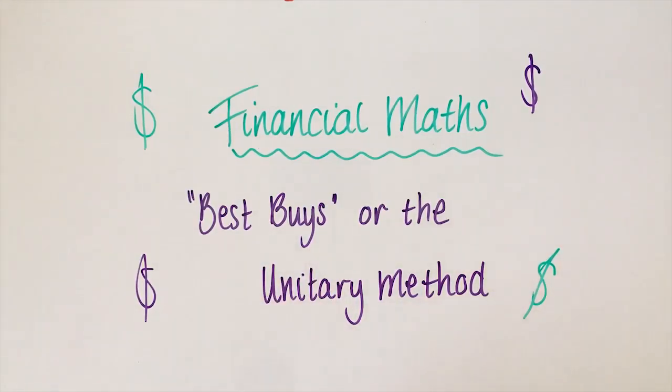In this lesson we're going to be looking at financial maths again, but we're going to be talking about best buys or the unitary method. These are both ways that you can determine what's the best financial decision you can make when you're at the shops, like buying something.